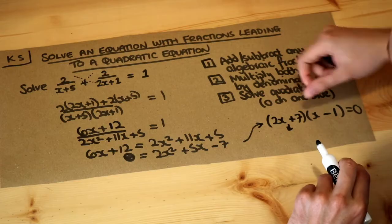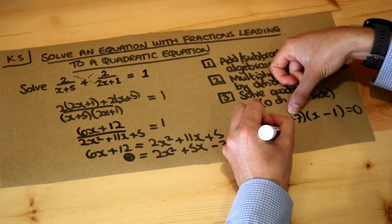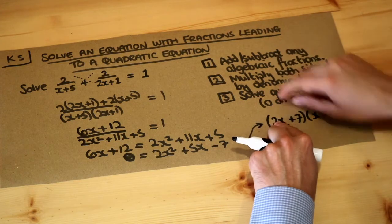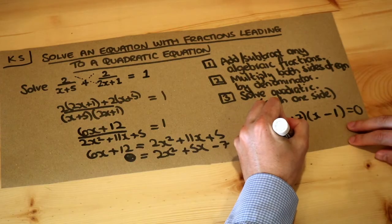Now if 2x + 7 is zero, do you remember the quick way to do it is you negate that, so -7 divided by whatever number is on the front of the x, so it's -7/2, or if you negate that you get +1, so x = 1 is the other solution.